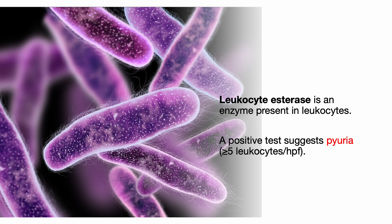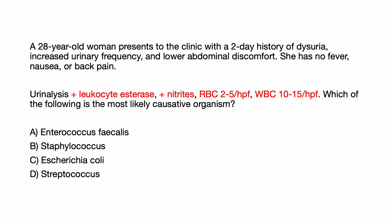Leukocyte esterase is an enzyme present in leukocytes. A positive test suggests pyuria, defined as at least 5 leukocytes per high power field. Here's a 28-year-old female who presents to the clinic with a 2-day history of dysuria, increased urinary frequency, and lower abdominal discomfort. She has no fever, nausea, or back pain. Urinalysis shows positive leukocyte esterase, positive nitrites, RBC 2-5 per high power field, and WBC 10-15 per high power field.